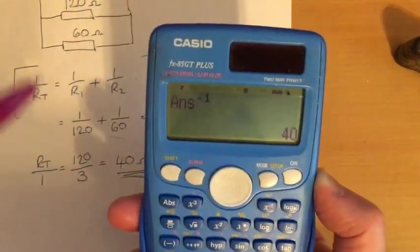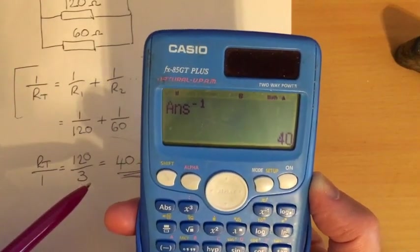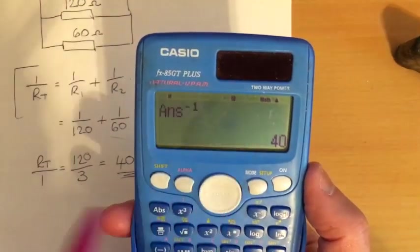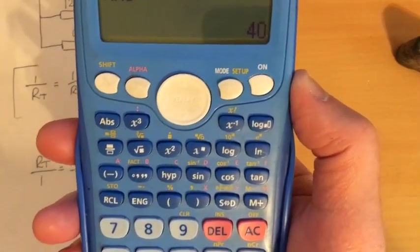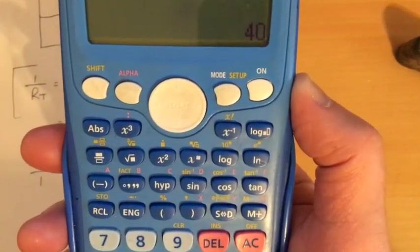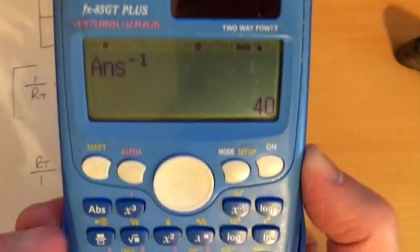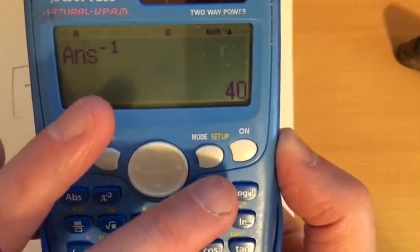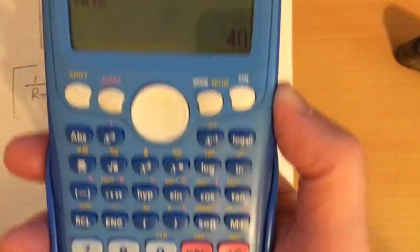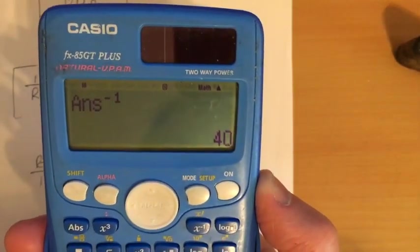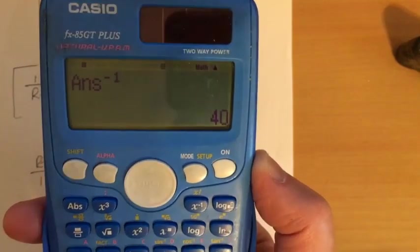Right? There might be some trickier questions than this though, where it gives you a surf as an answer and you have to press the STD button to get it as a decimal. Okay? But that's it really. Fraction button, flip it button, STD button to put it as a decimal number. Let's try loads of examples. Right? There we go.